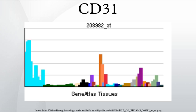CD31 is also expressed in certain tumors, including epithelioid hemangioendothelioma, epithelioid sarcoma-like hemangioendothelioma, other vascular tumors, histiocytic malignancies, and plasmacytomas. It is rarely found in some sarcomas, such as Kaposi's sarcoma, and carcinomas.